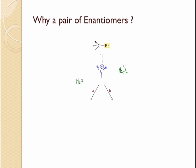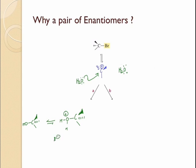Let's draw the product when the nucleophile comes in and attacks the carbocation in one direction. A protonated alcohol is formed, which undergoes deprotonation to give the corresponding alcohol as the final product — a base comes and abstracts the hydrogen, neutralizing the positive charge on oxygen. Similarly, if the nucleophile attacks the carbocation from the other side, you will get the product with the opposite configuration.